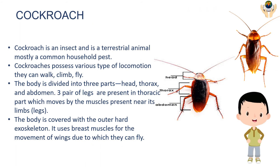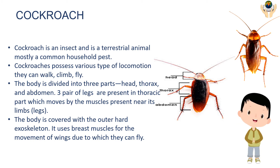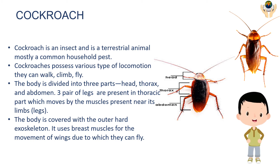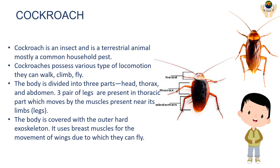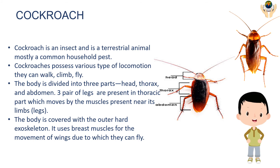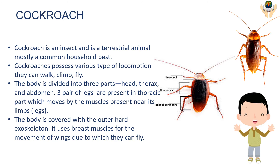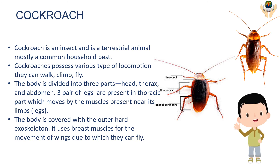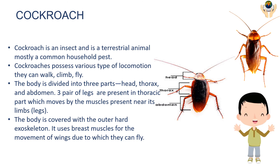Cockroach: the cockroach is an insect and a terrestrial animal, mostly a common household pest. Cockroaches possess various types of locomotion — they can walk, climb, and fly. The body is divided into three parts: head, thorax, and abdomen. Three pairs of legs are present in the thoracic part, which move by the muscles present near the legs. The body is covered with an outer hard exoskeleton, and it uses breast muscles for the movement of wings, allowing it to fly.